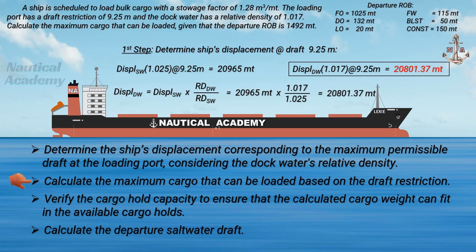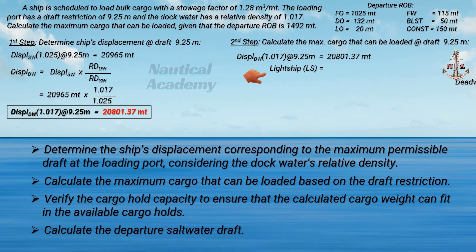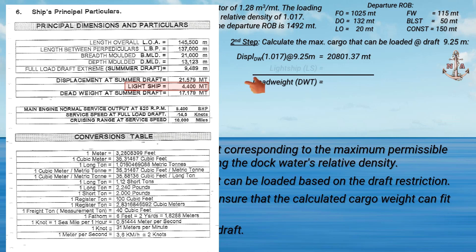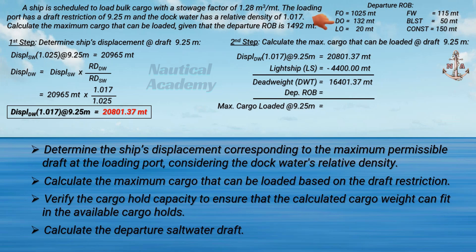Next, let's calculate the maximum cargo that can be loaded at a draft of 9.25 meters. We need the ship's displacement in the loading port at a draft of 9.25 meters, and subtract the light ship to determine the dead weight. We can find the value of light ship in the ship's general particulars, which is in this case 4,400 metric tons. The dead weight is 16,401.37 metric tons. Subtracting the departure ROB from dead weight, the difference is the maximum cargo that can be loaded. For the departure ROB or non-cargo weights, coordinate with the chief engineer for fuel oil, diesel oil, and lube oil. For the freshwater, unpumped ballast, and ship's constant, the chief officer must determine these. The departure remaining on board is 1,492 metric tons.